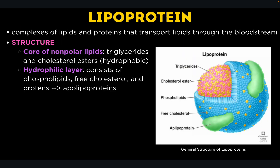Next, let's discuss lipoproteins. They are complexes of lipids and proteins that transport lipids through the bloodstream. The core consists of non-polar lipids — triglycerides and cholesterol esters — making up the hydrophobic region. The outer hydrophilic layer consists of phospholipids, free cholesterol, and proteins called apolipoproteins. The protein and phospholipid coating makes lipoproteins soluble in blood despite their lipid content.